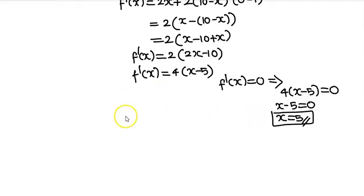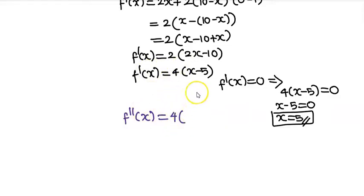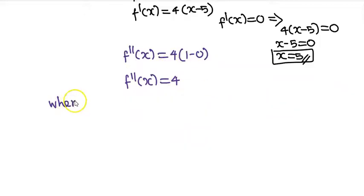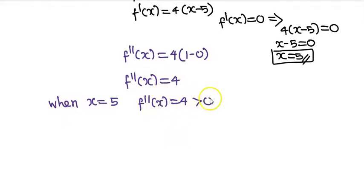Now we find the second derivative. f''(x) equals the derivative of 4 into (x minus 5), which equals 4. Since f''(x) equals 4, which is greater than 0, this confirms a minimum.